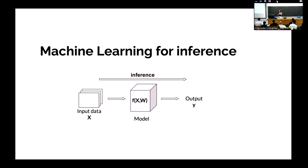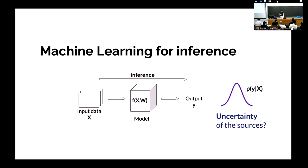Let us assume that we have some input data X from which we want to make some inference of a variable which is unknown — a non-observable variable Y — which will come as the output of a machine learning method. But what if not only point estimates of Y are needed, but we also want some measure of uncertainty? We would want to infer a probability distribution — a posterior of Y — from the input X.